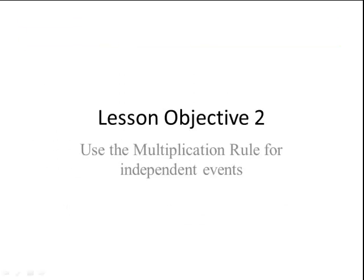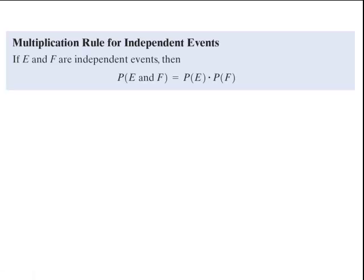Lesson objective number two, the multiplication rule for independent events. If E and F are independent events, then the probability of E and F happening at the same time is equal to the probability of E times the probability of F.